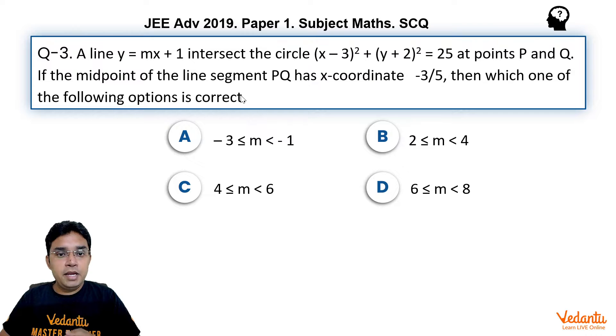A line y equals mx plus 1 intersects the circle (x minus 3)² plus (y plus 2)² equals 25 at points P and Q. If the midpoint of the line segment PQ has x-coordinate minus 3 upon 5, then which one of the following options is correct. Let us first solve this question, then we will see what options are.